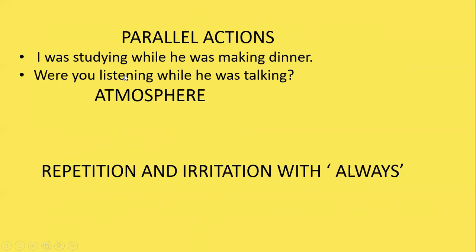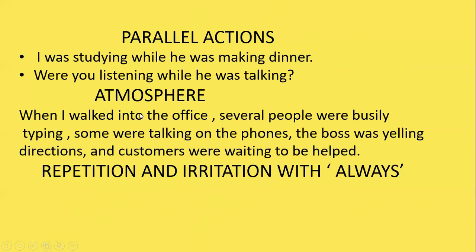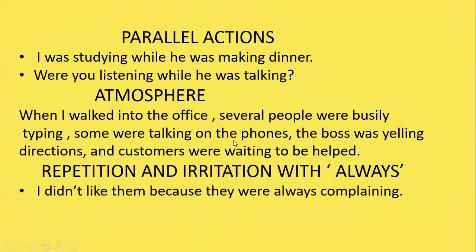To create an atmosphere using past continuous: 'When I walked into the office, several people were busily typing, some were talking on the phones, the boss was yelling directions, and customers were waiting to be helped.' In English we often use a series of parallel actions to describe the atmosphere at a particular time in the past. You can also use past continuous for repetition and irritation with 'always': 'I didn't like them because they were always complaining.' Use 'always' or 'constantly' between the be-form verb and verb plus -ing to express negative emotion.